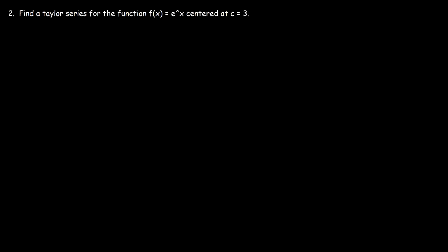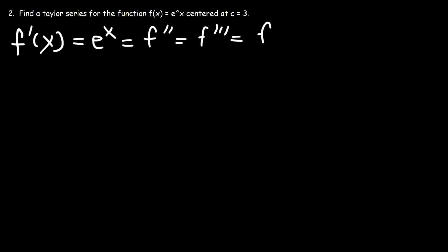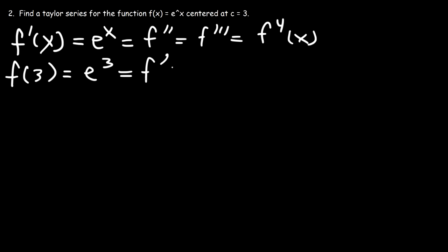Let's try another example: find the Taylor series for f(x) = e^x centered at c = 3. The derivative of e^x is e^x, as is every higher derivative. So f(3) = f'(3) = f''(3) = ... = e³. All derivatives evaluated at c=3 are equal to e to the third power.